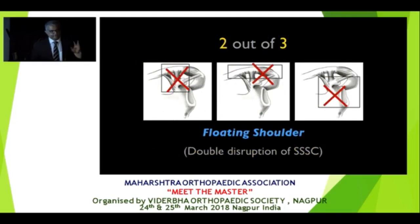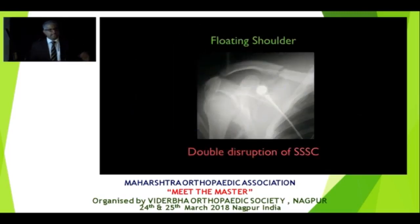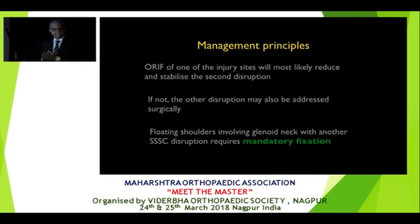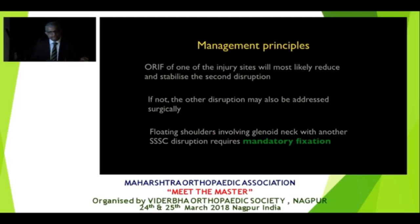When two out of these three are involved in a fractured scapula, that is called a floating shoulder — a double disruption of the superior suspensory complex. Whenever you see a double disruption, you have to consider fixation of either one component. When you fix one component, it is very likely the other may fall into place and can be treated non-operatively. If it does not, you will have to go ahead and fix the second component as well, because these require mandatory fixation.